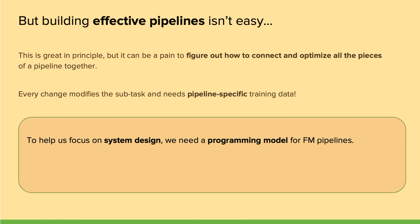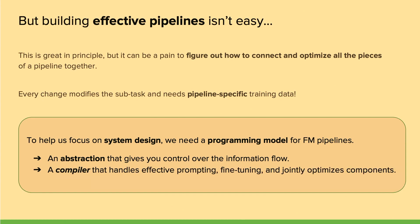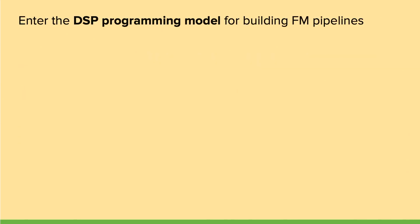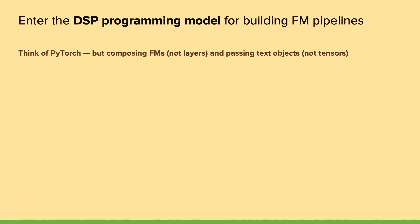What we'd like is a way of abstracting away the system design from the high-level task specification. For that, we want a programming model that lets us interface with foundation model pipelines in a high-level, abstract way — one that gives control over the information flow. A helpful analogy is to think of DSP like PyTorch, but instead of layers we have foundation models, and instead of tensors we have text objects passed between foundation model components.